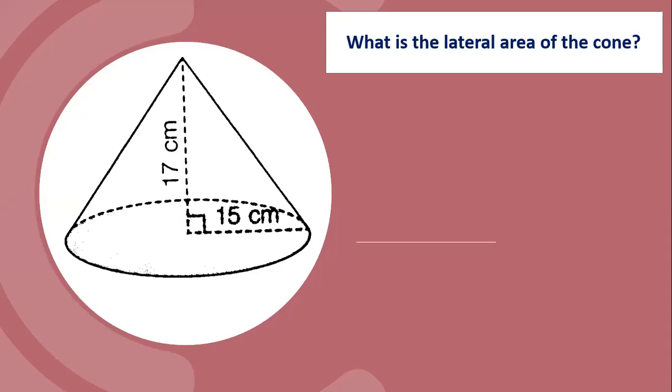To get the lateral area, we have a formula of pi times the radius times the slant height. Now we don't have the slant height.